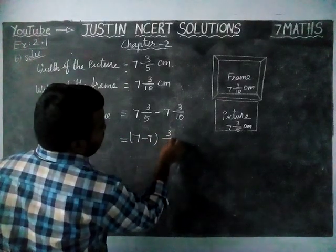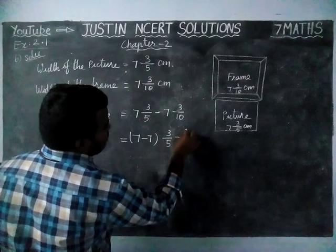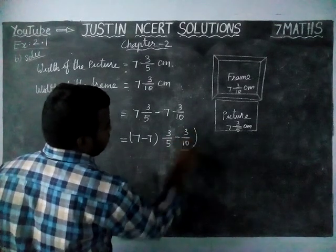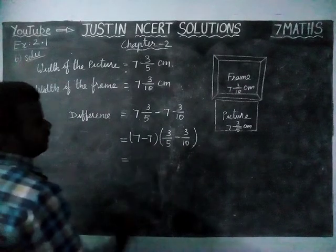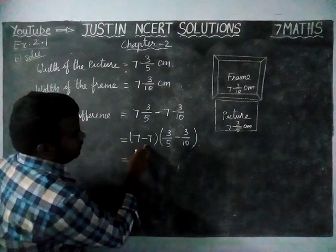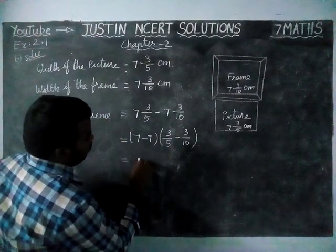Next, 3 divided by 5 minus 3 divided by 10. When we are getting 7 minus 7, we get 0. So now no problem.